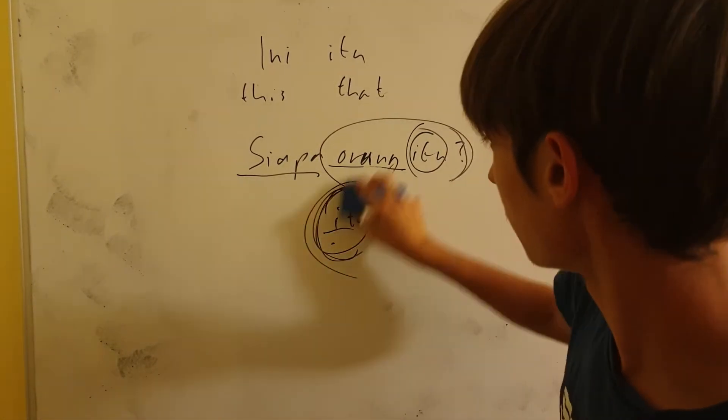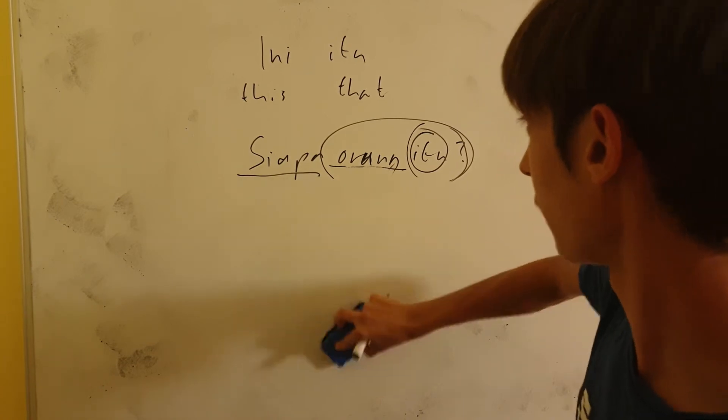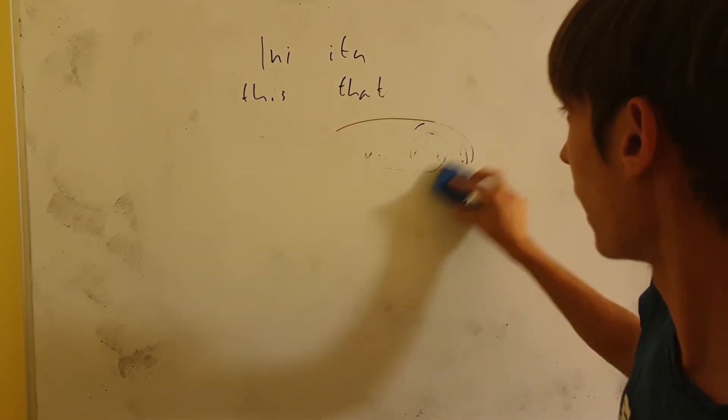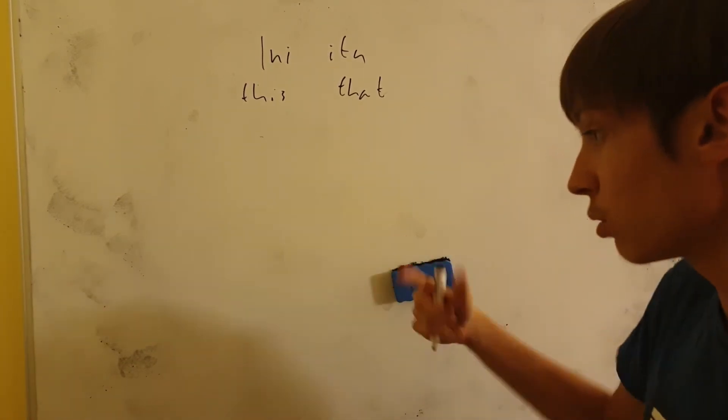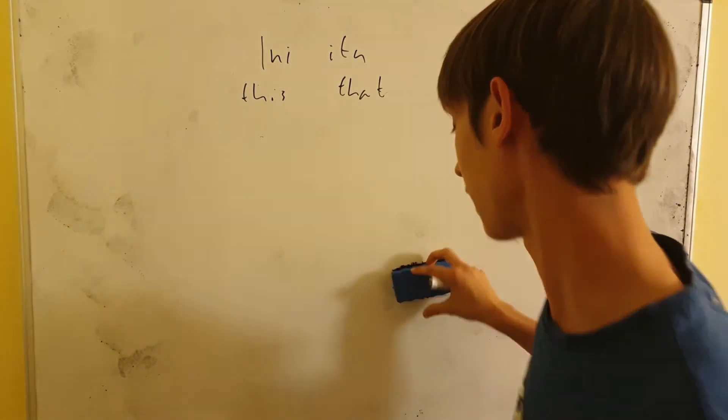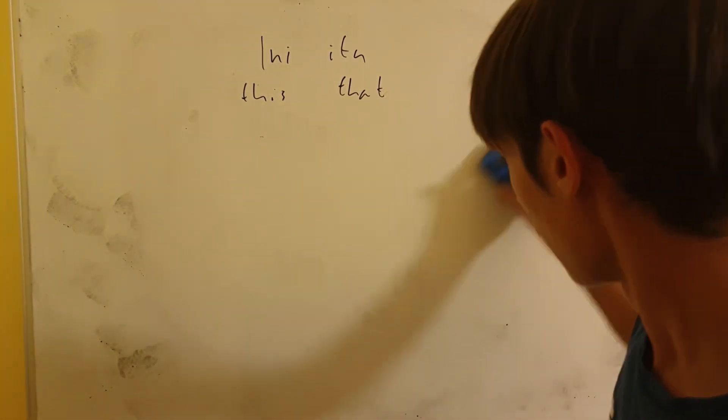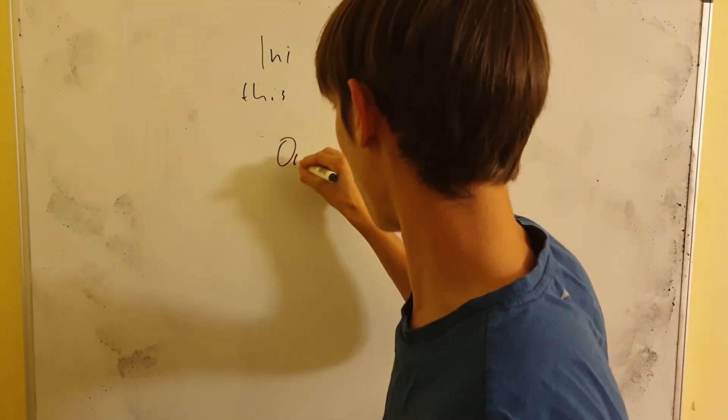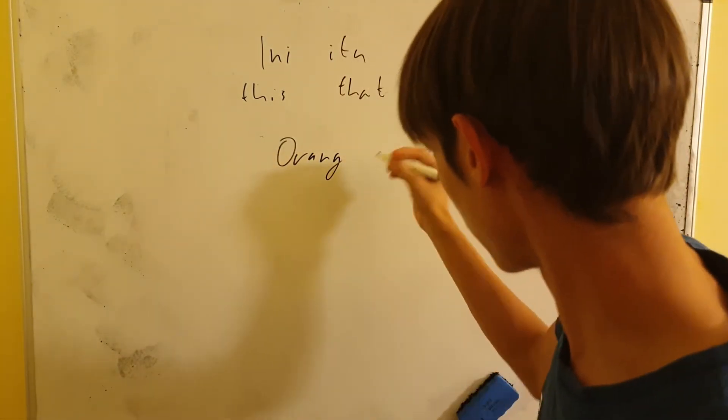So, that's the big difference between ORANG ITU and ITU ORANG. So, we have to understand the ITU and ITU. Still, ITU, ITU. But in different cases, it might play out differently in the sentence. So, we can both say, for example, ORANG, as I showed you.